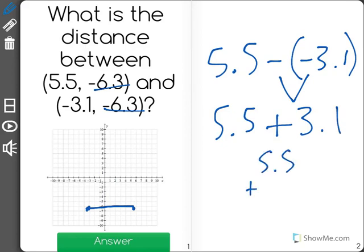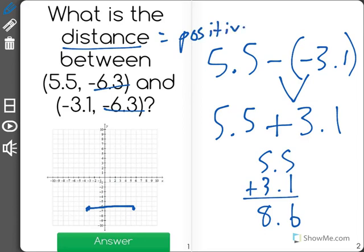And when I put one on top of the other and solve, you'll see that the total distance, remember, distance is always positive. You cannot have a negative distance.